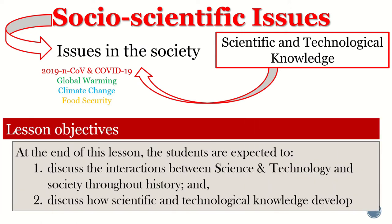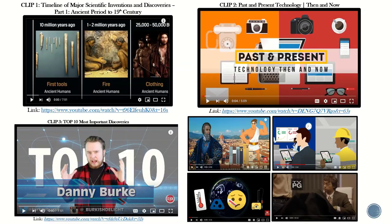For the first module, the main objectives are as follows: at the end of this lesson, students are expected to discuss the interaction between science and technology and society throughout history, and discuss how scientific and technological knowledge develop. I have given you seven videos to watch, and you will answer guide questions per video.